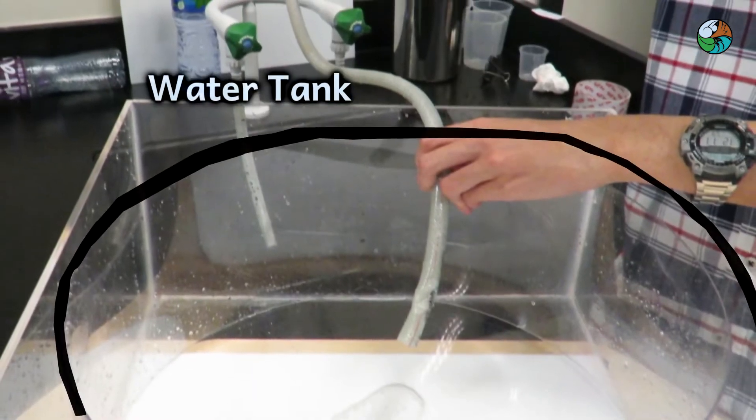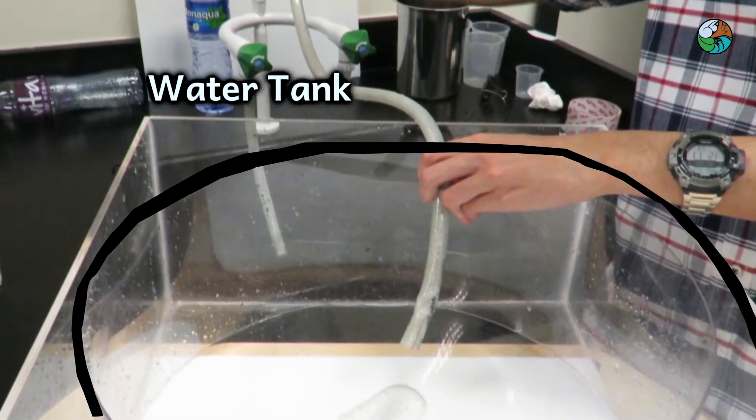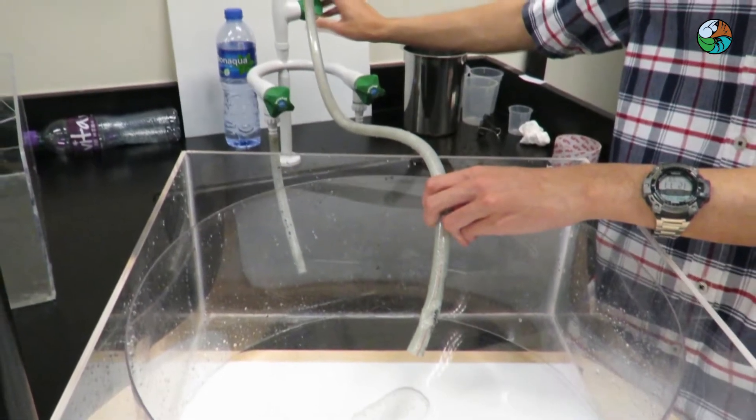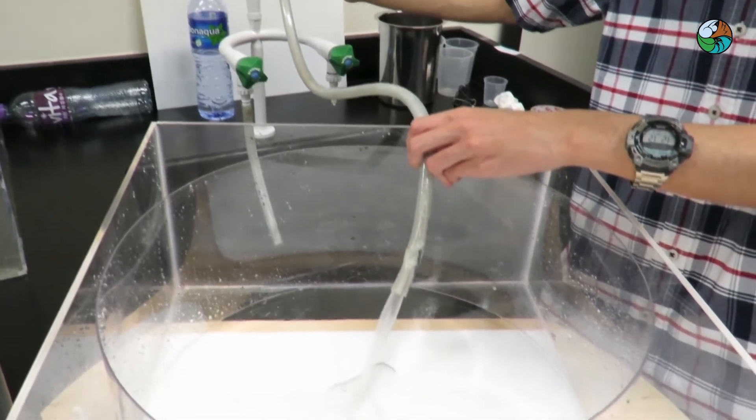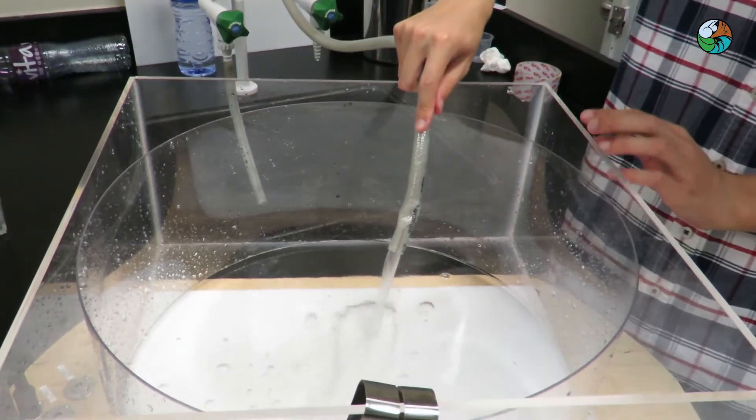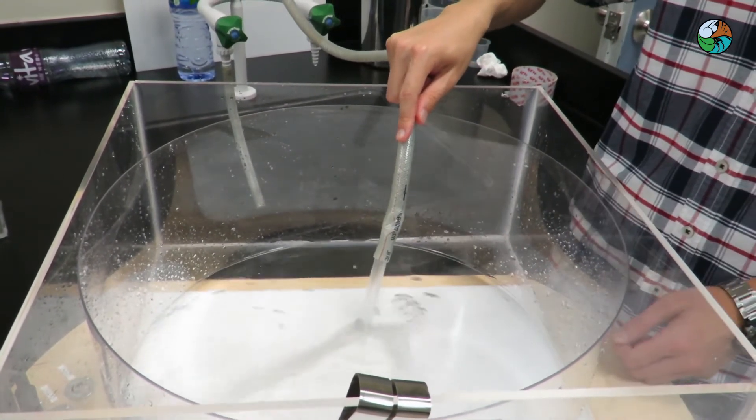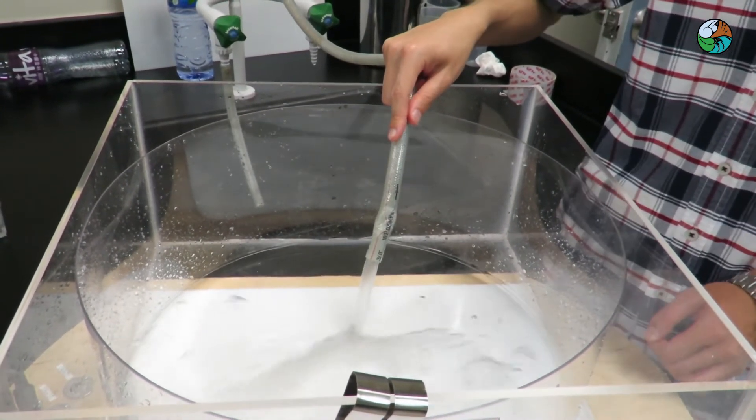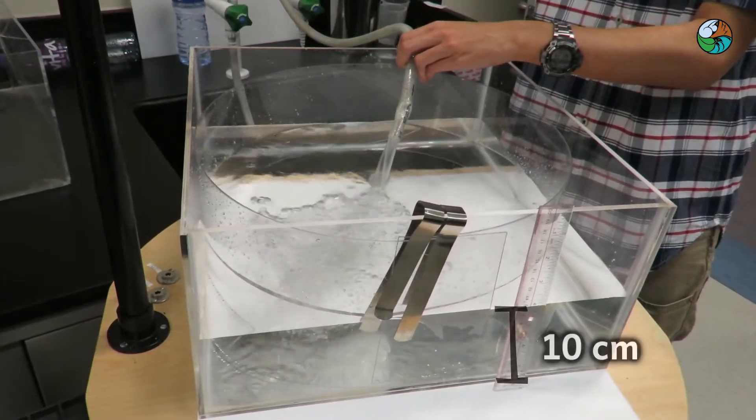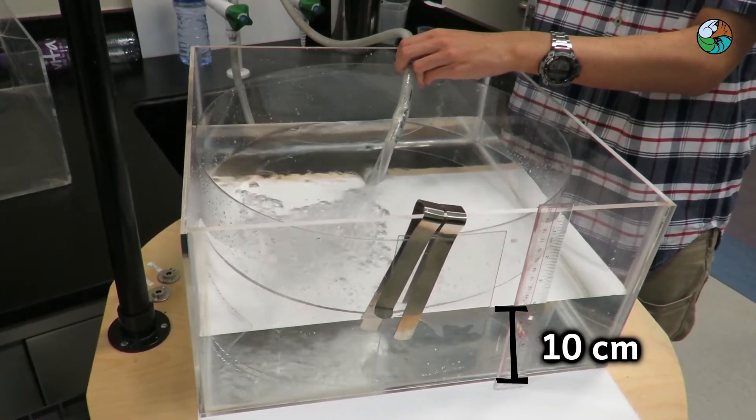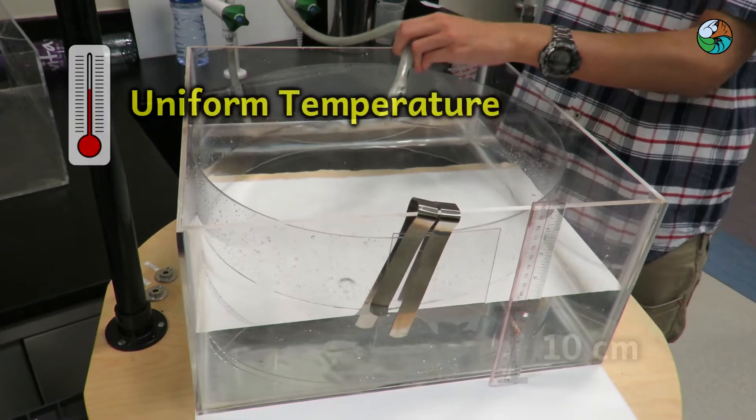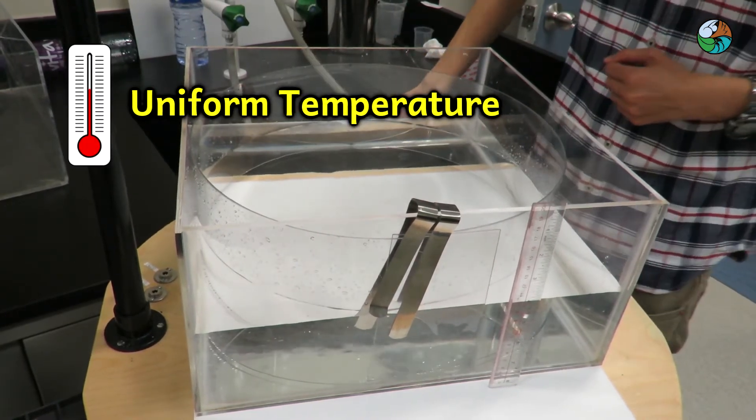First, prepare a water tank with a circular insert. Fill the tank with water to a depth of about 10 cm. Make sure the water has a uniform temperature.